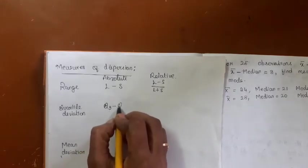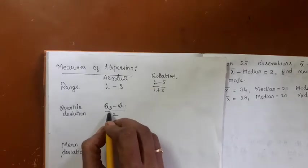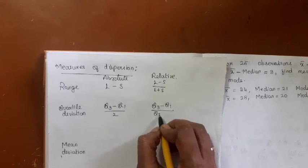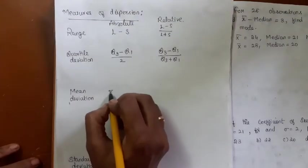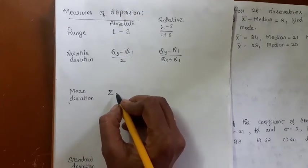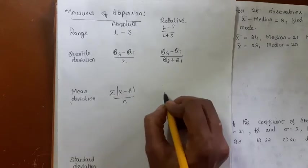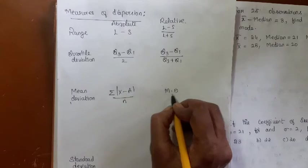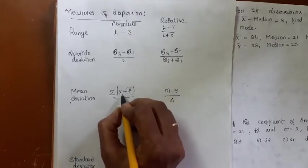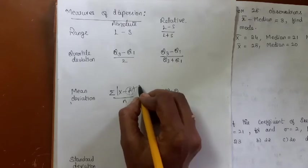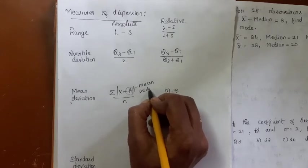The formula for quartile deviation, also called the semi-interquartile range, has its relative measure as (Q3 minus Q1) divided by (Q3 plus Q1). Mean deviation conforms with the definition of measures of dispersion — it measures the average amount of variation in the data with respect to measures of central tendency, where 'a' can be mean, median, or mode.